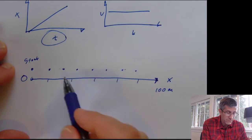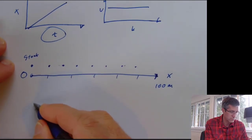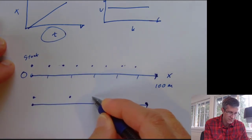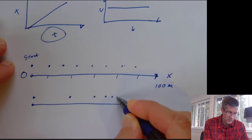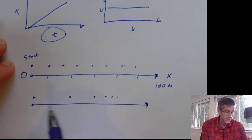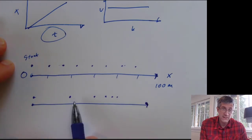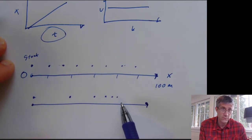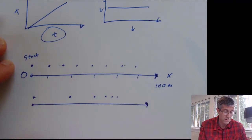If my dots are getting closer together — so if I have a motion map where dots start far apart and then get closer and closer — this is the distance traveled each second for something that's slowing down. This represents negative acceleration. And evenly spaced dots represent constant velocity, or zero acceleration.